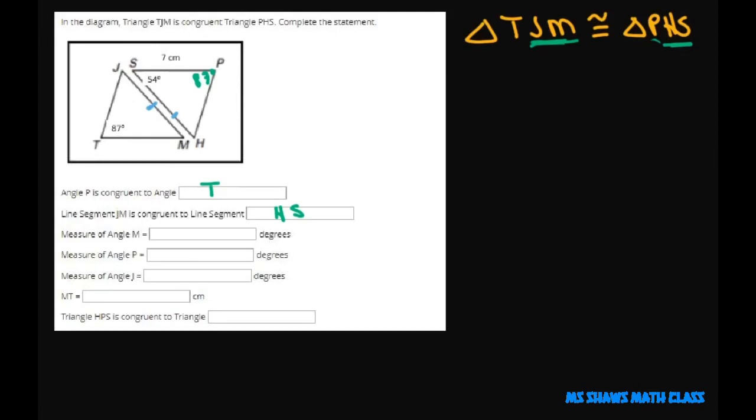The measure of angle M equals how many degrees? So M goes with S. The measure of angle M equals the measure of angle S, which is 54 degrees.